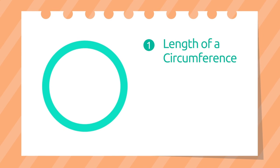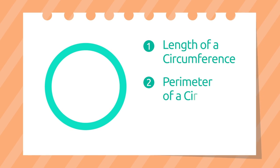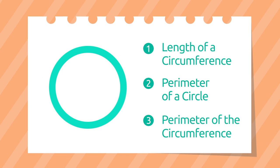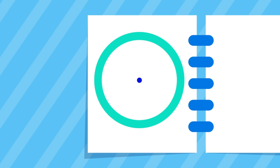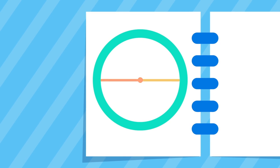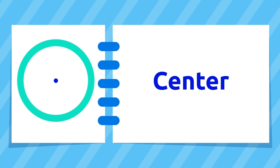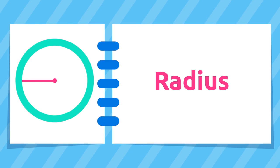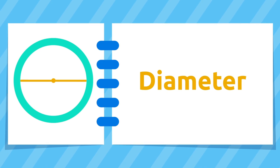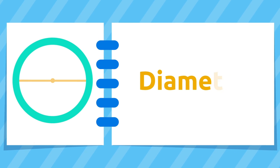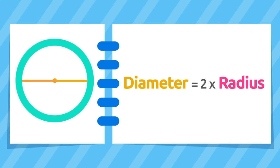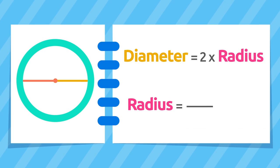The concept 'length of a circumference' can also be referred to as the perimeter of a circle or the perimeter of the circumference. Let's recap some elements: the center, the radius, and the diameter. Remember that the diameter is twice the radius, or in other words the radius is half the diameter.